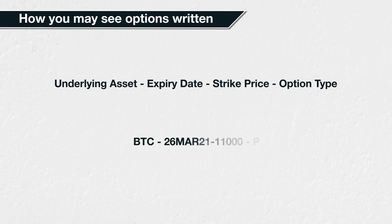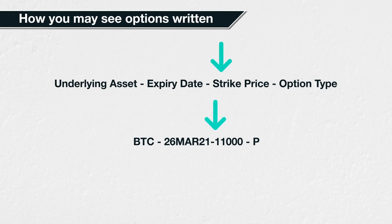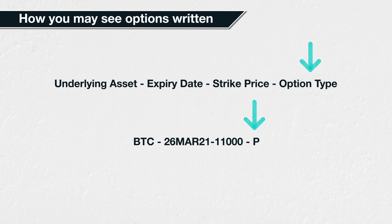If you see an option written as BTC-26MAR21-11000-P, this means the underlying asset is Bitcoin (BTC), the expiry date is the 26th of March 2021, the strike price is $11,000, and the option type is a put. The buyer of this put option is purchasing the right to sell Bitcoin at a price of $11,000 on the 26th of March 2021.